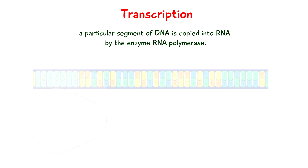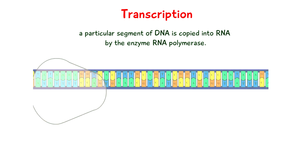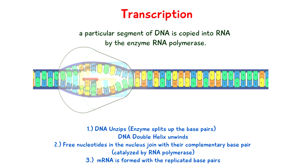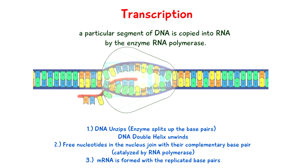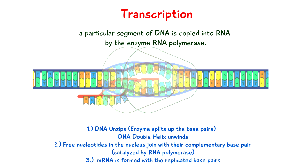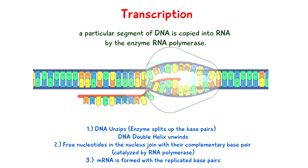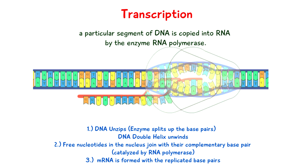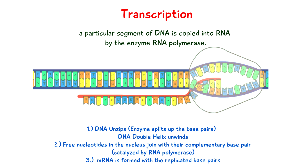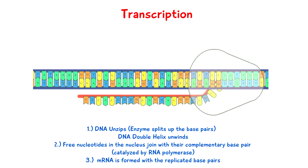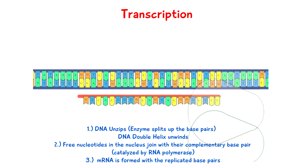For transcription to happen, the DNA unzips — an enzyme splits up the base pairs and the DNA double helix unwinds. Free nucleotides in the nucleus find their complementary base pairs and pair up with the help of the enzyme RNA polymerase. A new backbone is formed, giving us a complete RNA strand which is separate from the DNA strand.